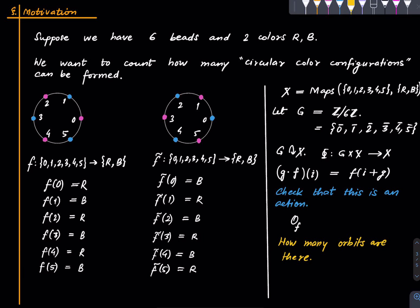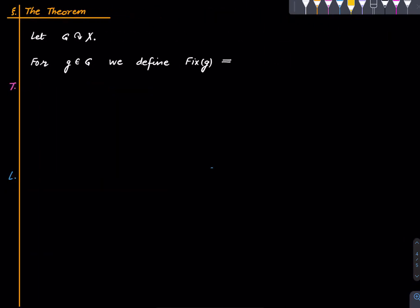This is a motivating example, and we have a systematic way to count orbits captured by the following theorem. Start with an action of a group on a set X. For an element g of the group, define Fix(g) as those elements of the set which are fixed by g — not moved by g. This is a subset of X and is a dual notion to the stabilizer: the stabilizer of an element x was a subset of the group, while here we fix a group element and ask which elements of X it fixes.